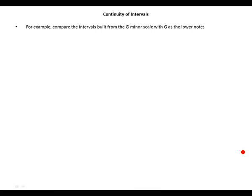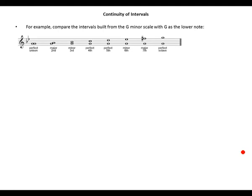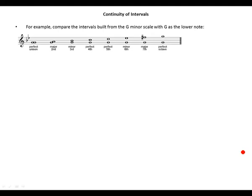For example, compare the intervals built from the G minor scale with G as the lower note: major second, minor third, perfect fourth.